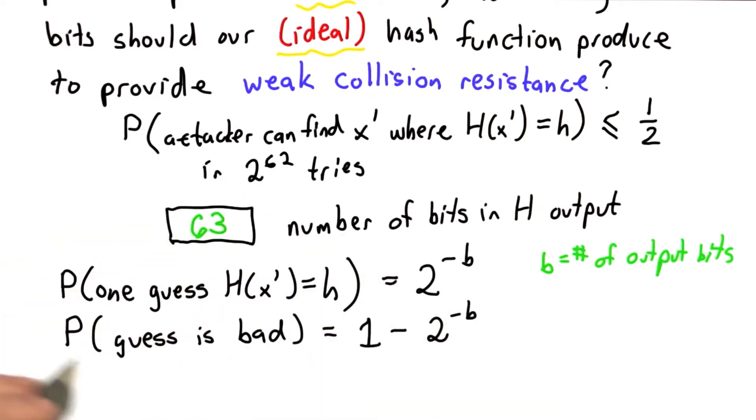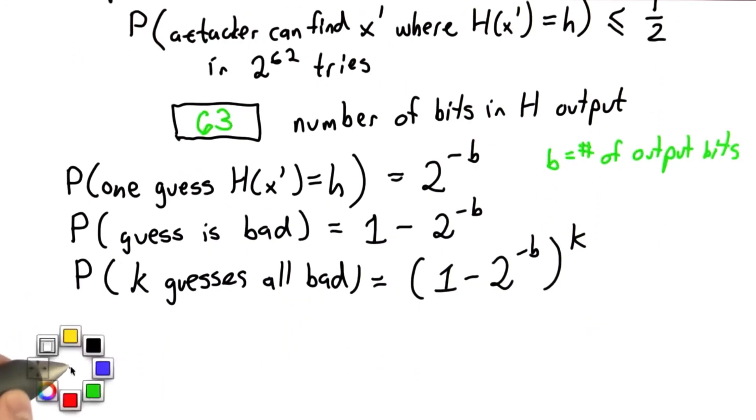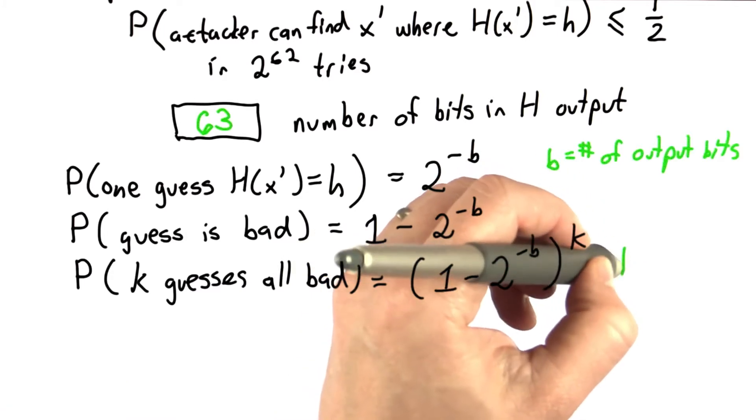And now over a series of guesses, the probability that they're all bad is that raised to the number of guesses power. And we've said that k is equal to the number of guesses here, which we said was 2 to the 62.